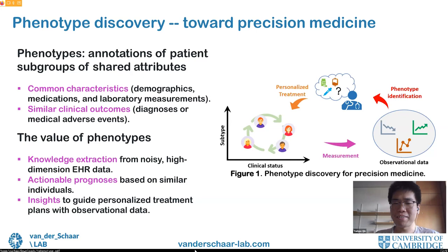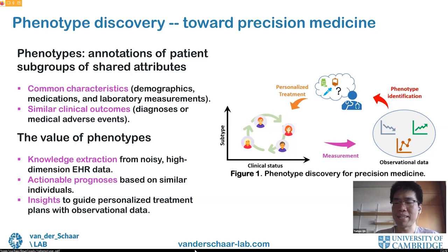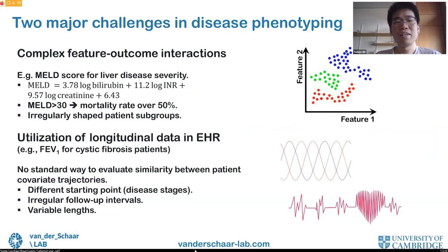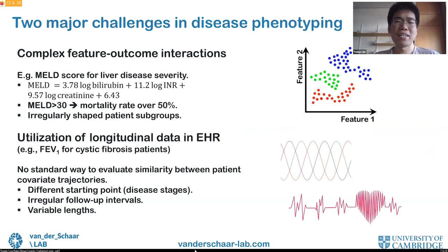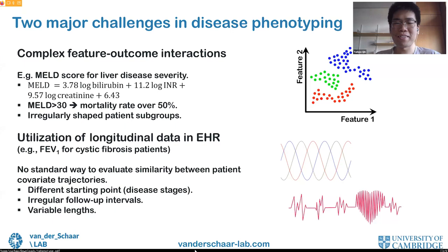The identification of patient phenotypes is very important in precision medicine as it enables knowledge extraction from noisy, high-dimensional healthcare data, allows actionable prognosis based on similar patients, and provides insights to help clinicians issue tailored treatments. While disease phenotyping is essential, there are two major challenges. First, there may be complex interactions between patient features and clinical outcomes. For example, the MELD score evaluates severity of liver disease based on three major risk factors, leading to irregularly shaped patient subgroups in feature space that conventional methods like decision trees or k-means fail to correctly identify.